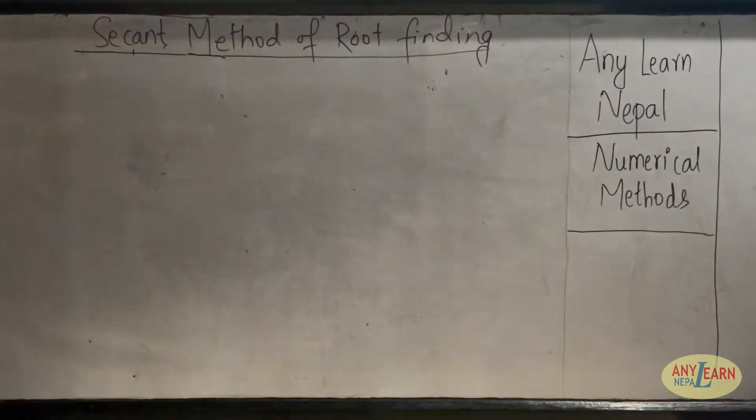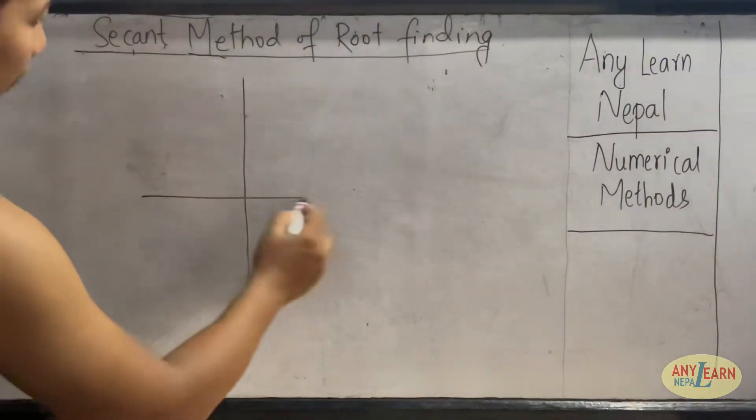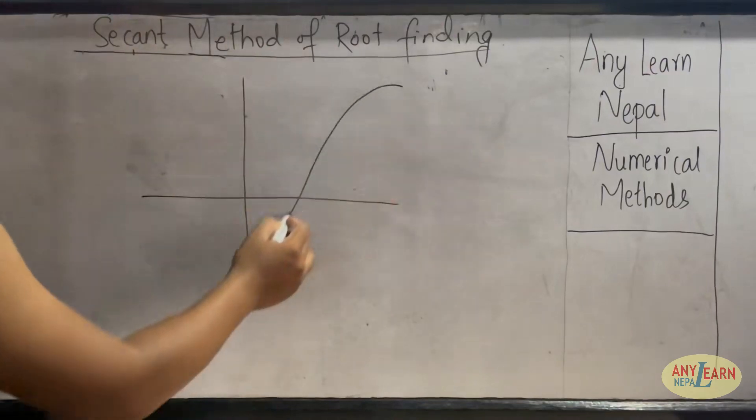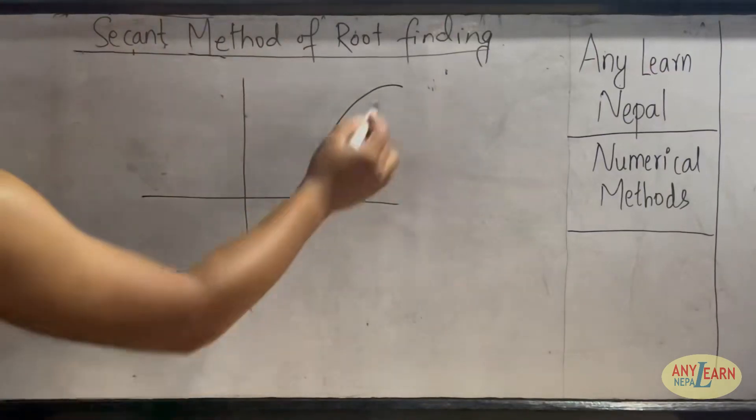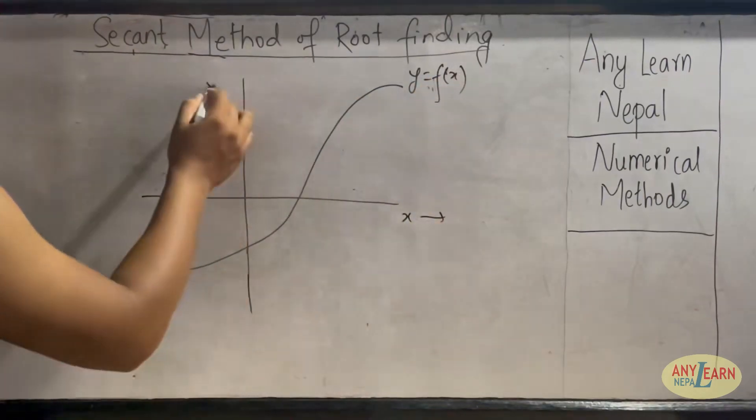To explain that, let's draw one arbitrary curve. So here is a graph, and let's say this is the arbitrary curve y equals f(x). This is the x-axis and this is the y-axis.